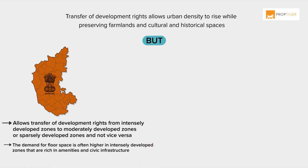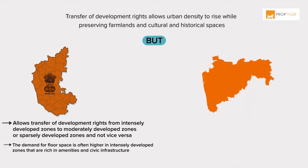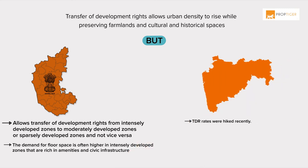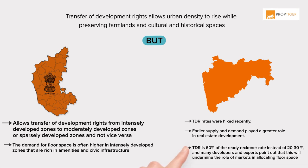But the demand for floor space is often higher in intensely developed zones that are rich in amenities and civic infrastructure. In Maharashtra, TDR rates were hiked recently. Earlier, when TDR was available in any part of Mumbai, supply and demand played a greater role in real estate development. Now, TDR is 60% of the ready-reckoner rate instead of 20-30%, and many developers and experts point out that this will undermine the role of markets in allocating floor space.